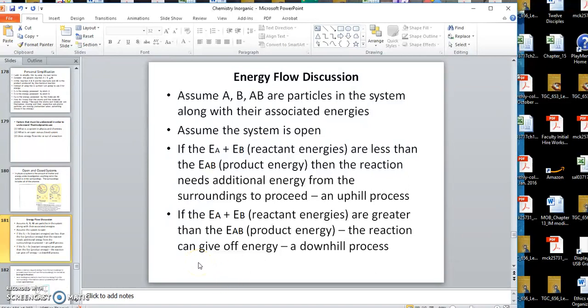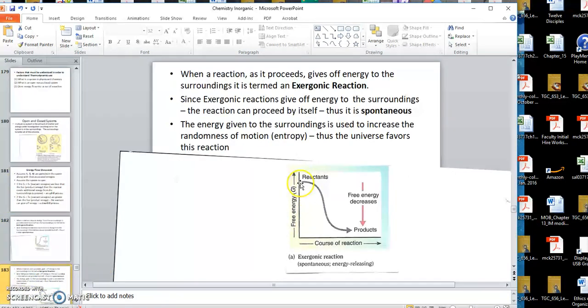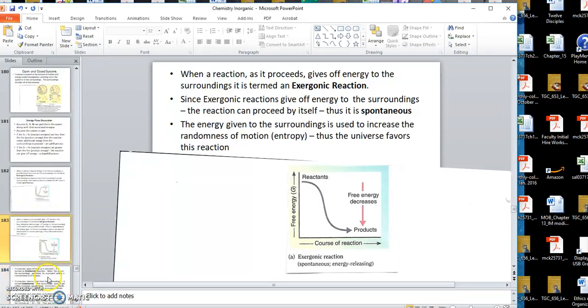Endergonic reactions are non-spontaneous. If the E_A plus the E_B equaled the E_AB, that means they were equal, then the reaction would still not go. The reason being is there's no energy left over to pay the universe. So the only way that a reaction can go is if the reactant's energy is greater than the product's energy. It would be downhill. Here's the reactant's energy, and here's the product's energy. The energy of the reaction is higher, so when it comes down, there's energy to be given off. Exergonic reaction, spontaneous.